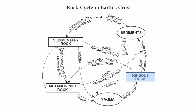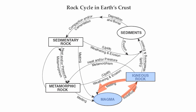Igneous rocks can become metamorphic by simply undergoing intense heat and pressure. Or igneous rocks can become themselves by melting back into magma and then solidifying into a different type of igneous rock.